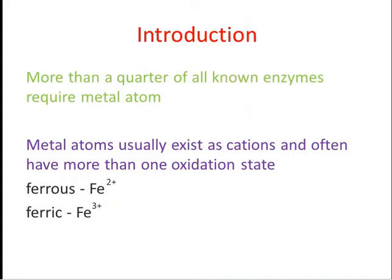Metal ions usually exist as cations and often have more than one oxidation state, as with ferrous Fe²⁺ and ferric Fe³⁺. This positive charge can stabilize transition states by electrostatic interactions, giving one mechanism for catalysis by metals. Irrespective of oxidation state, a metal ion can bind a particular number of ligands by accepting electron pairs to form coordinate bonds in a specific orientation.